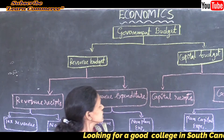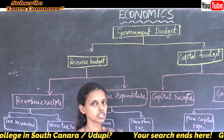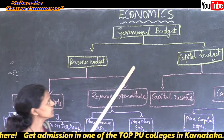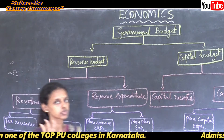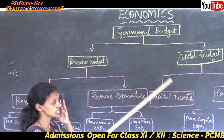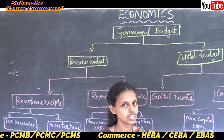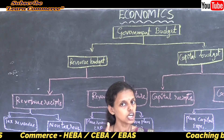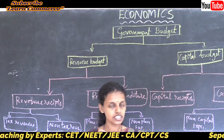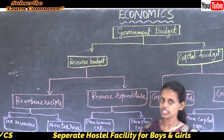Let us see the chart of government budget. Through the chart I will explain the government budget — it is easy for you to understand. This is very important for four marks, so you should concentrate here. Government budget means it is an annual financial statement of a government. It includes revenue and expenditure of the government. A financial year starts from 1st April to 31st March.